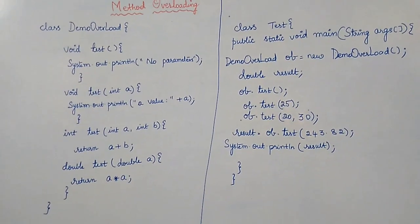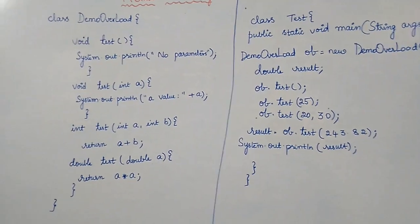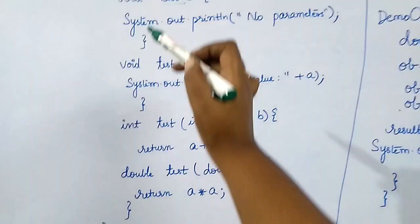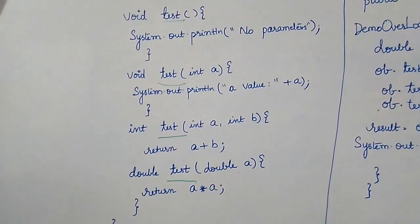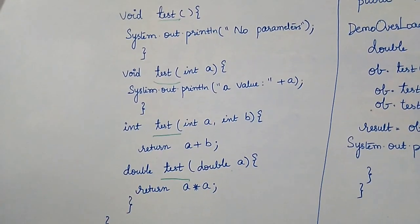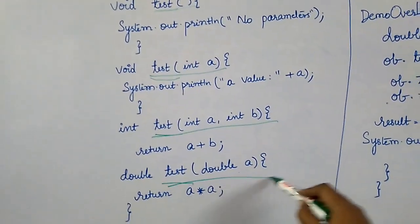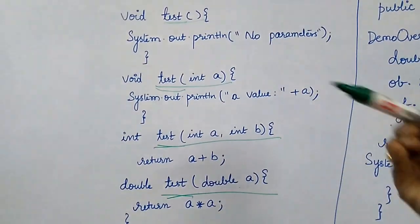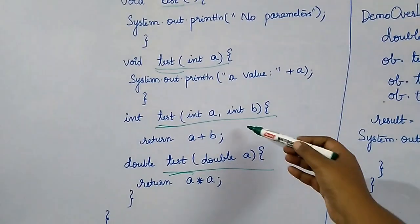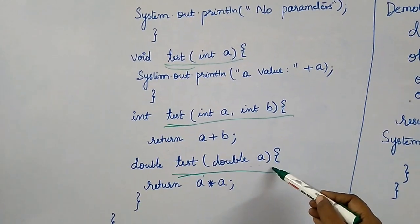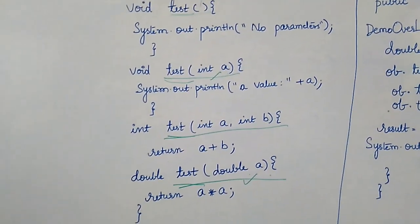Let's look at this program. The class is called DemoOverload, and inside it there are four methods all with the same name 'test'. Such methods are called overloaded methods — same name but different signatures. The parameters vary in type and number: the first has no parameters, the second has one integer parameter, the third has two integer parameters, and the fourth has one double parameter.